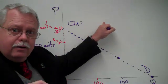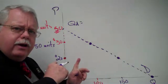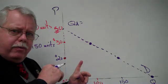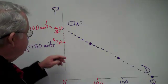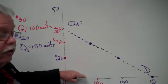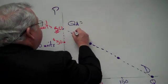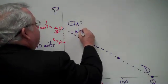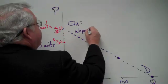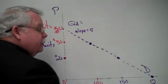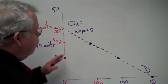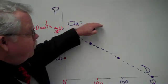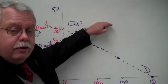We already did the slope. In the last video, we said the slope in this equation was negative five. So what we need first, then, is the intercept.